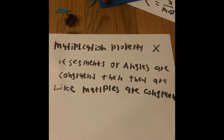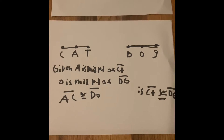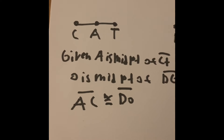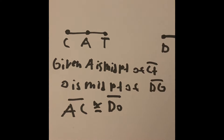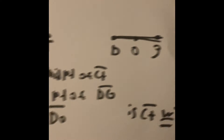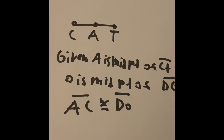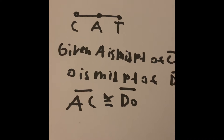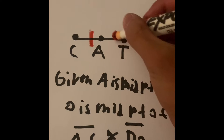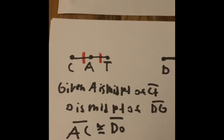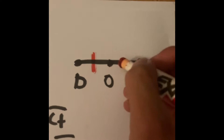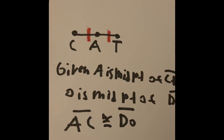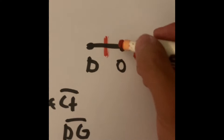Here's an example. The problem given to us is: A is the midpoint of CT, and O is the midpoint of DG. We can ask: is AC congruent to DO? We understand that A is the midpoint of CT, which means those two halves are congruent. Similarly, O is the midpoint of DG, so those two halves are congruent. So we can say AC is congruent with DO.